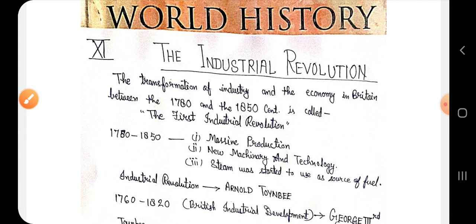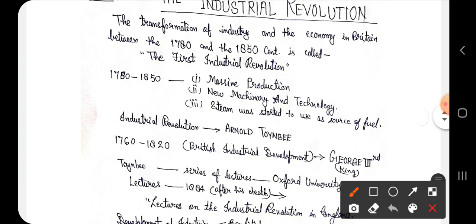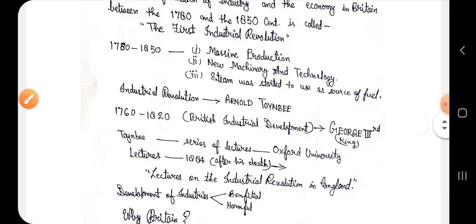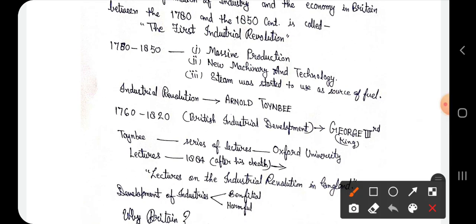What happened during that period? During 1780 and 1850, there was a massive production of several things. The second thing was that new machinery and technology were adopted — people started to use new machines and new technologies.